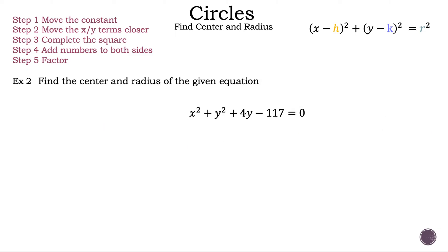Now let's move on to example 2. Find the center and radius of the given equation x squared plus y squared plus 4y minus 117 is equal to 0. We have the standard equation of a circle on the top right: the quantity of x minus h squared plus the quantity of y minus k squared is equal to r squared, where (h, k) is the center and r is the radius. When we complete the square, we will manipulate the equation so that it can be written as the sum of two single terms squared, so we can see how the circle shifted from the origin.